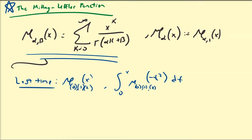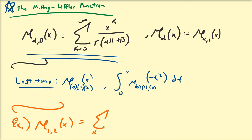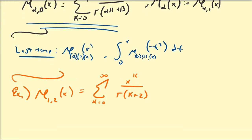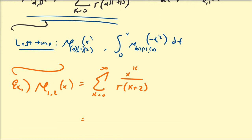Let's start with some basic examples. Example 1: find the elementary representation of E_{1,2}(x). Using the definition, this is the sum from k=0 to infinity of x^k divided by Gamma(1·k + 2), which equals the sum from k=0 to infinity of x^k divided by (k+1) factorial.